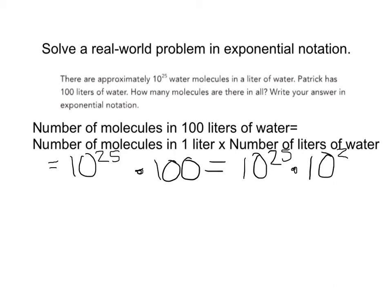So now let's use the product of powers property to simplify the expression. I see I have the same bases, and they're being multiplied together. So I can use my product of powers, so my base is going to remain 10, and I'm now going to add my exponents of 25 plus 2, which will give me 10 to the 27th.